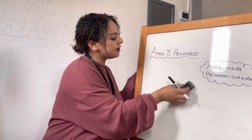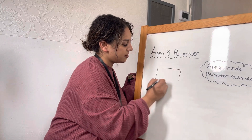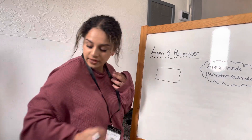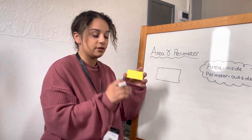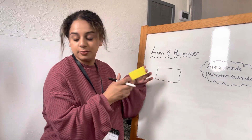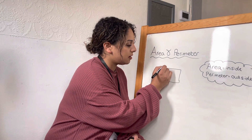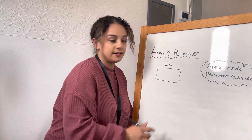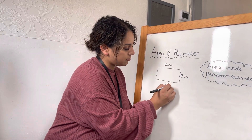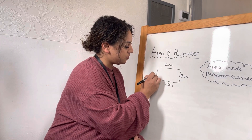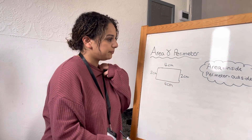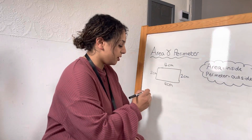We're working on rectangles specifically today, because they are the easiest to work with when doing area and perimeter. Now, when you have a rectangle, keep in mind that your top and bottom sides should be the same, and the two side lengths should also be the same. So if I have a four centimeter side and a two centimeter side, the top is four, the bottom is also four, and both side lengths are two. If you're given a rectangle without all the measurements, those are the rules you need to stick by.